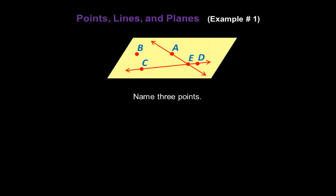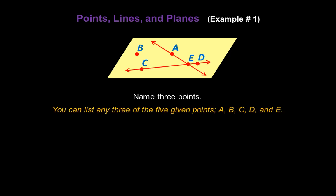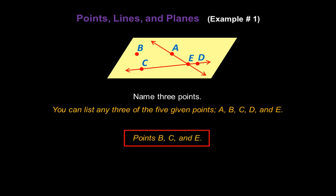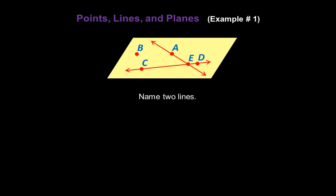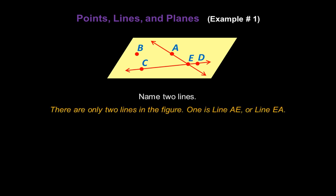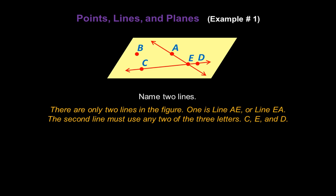Now let's look at some examples. Take a look at this figure and name three points. You can list any three of the five given points: A, B, C, D, and E. So let's pick three — points B, C, and E. Now let's name two lines in the figure. There are only two lines. One is line AE or line EA. The second line must use any two of the three letters C, E, and D — so let's call this second line CD. So now we have line AE and line CD in this figure.